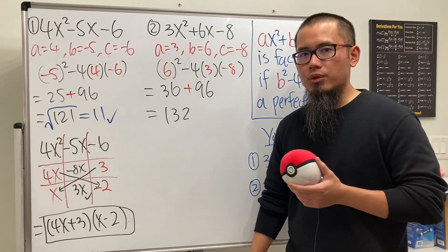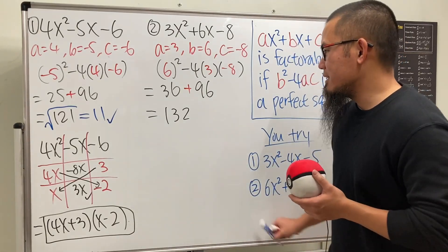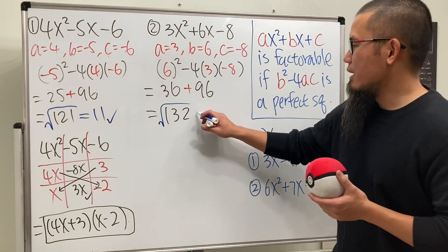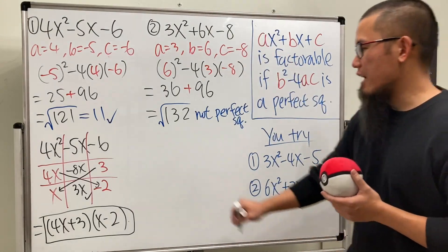Yes, it's 132. Is 132 a perfect square? No. You can go ahead and test it out on your calculator. I'll just say not a perfect square. So in fact, this right here is not factorable.